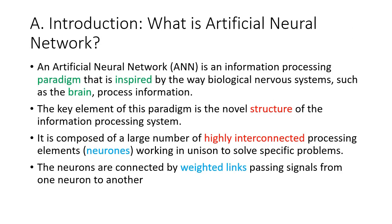So what is an artificial neural network? ANN is an information processing paradigm inspired by the way biological nervous systems, such as the brain, process information. The key element of this paradigm is how it processes information through the structure of the information processing system. This system is composed of a large number of highly interconnected neurons, connected to each other and working in unison to solve specific problems. These neurons are connected by weighted links and pass signals from one neuron to another.